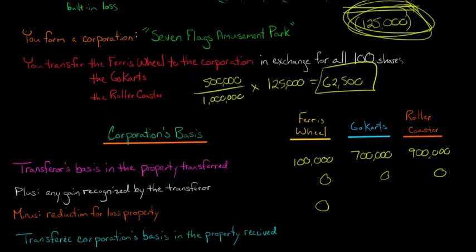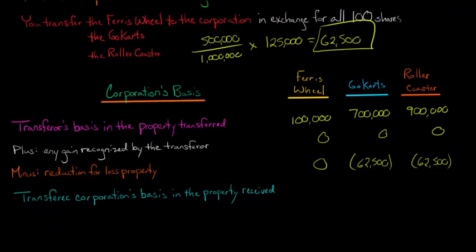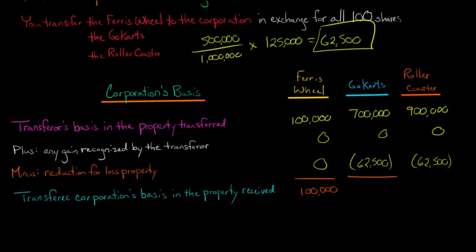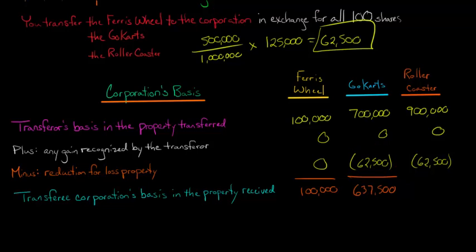So we subtract $62,500 from each of those properties. The Ferris wheel's basis remains $100,000. The go-karts' basis becomes $637,500 ($700,000 minus $62,500). The roller coaster's basis becomes $837,500 ($900,000 minus $62,500). Those are the transferee corporation's — Seven Flags' — bases in the properties received.